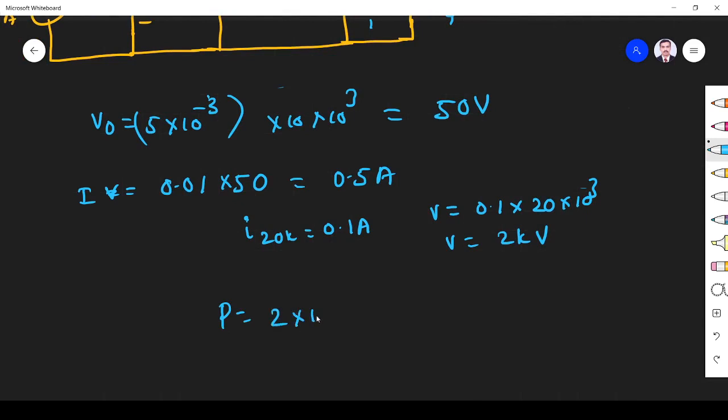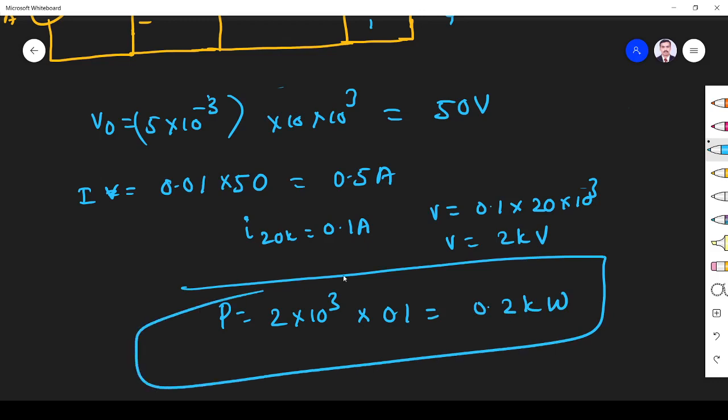P is equal to V into I. V is 2 into 10 power 3. I is 0.1. So 0.2 kilowatts. Simple problem. I hope I understand. Both these problems.